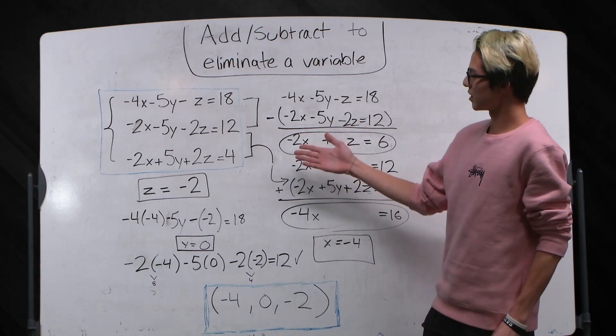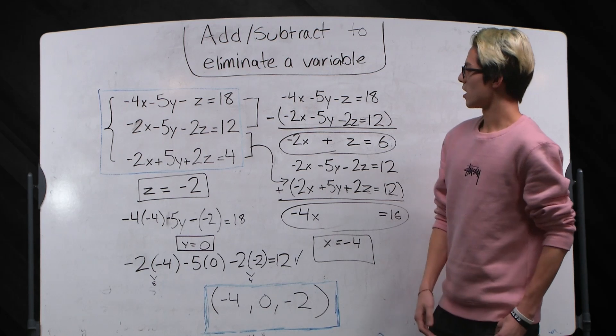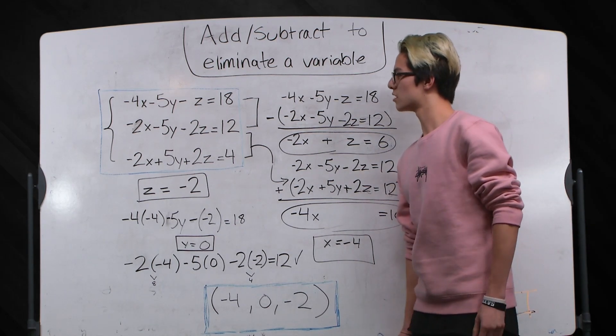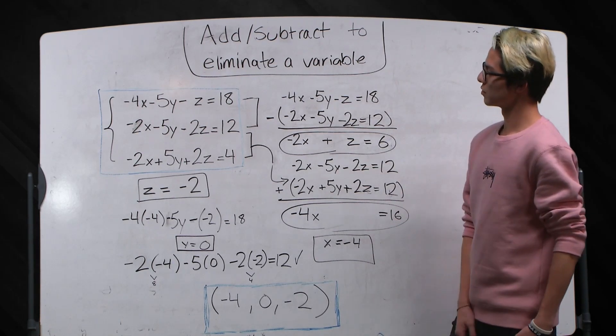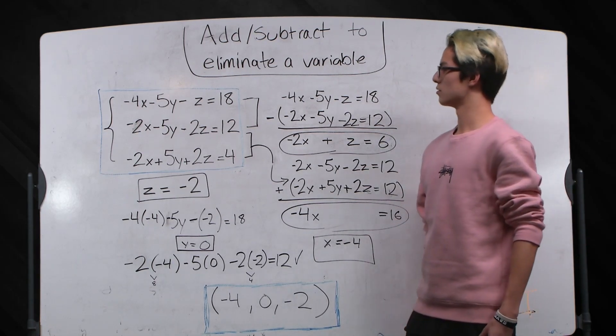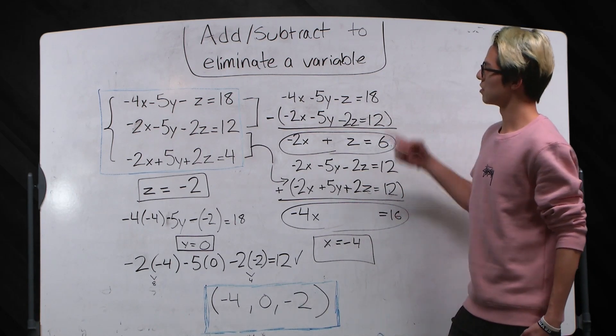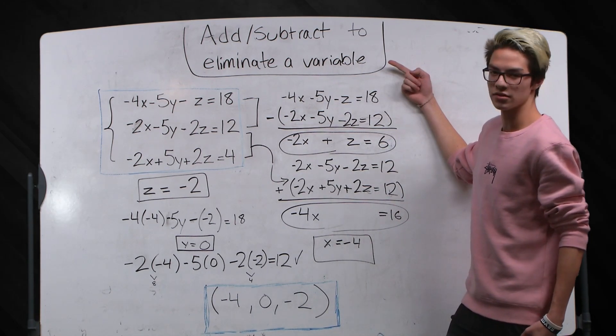So I have an example problem written right here, and this seems very challenging, but all you need to know is that you just need to eliminate one variable from two equations to get two variables. So the main idea here is to add or subtract to eliminate a variable.